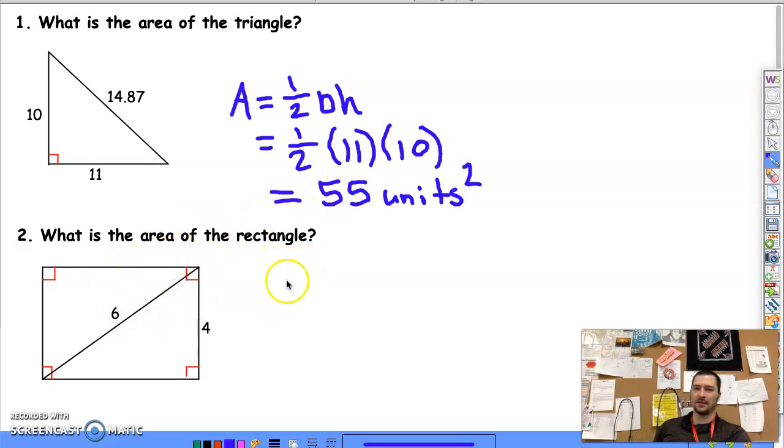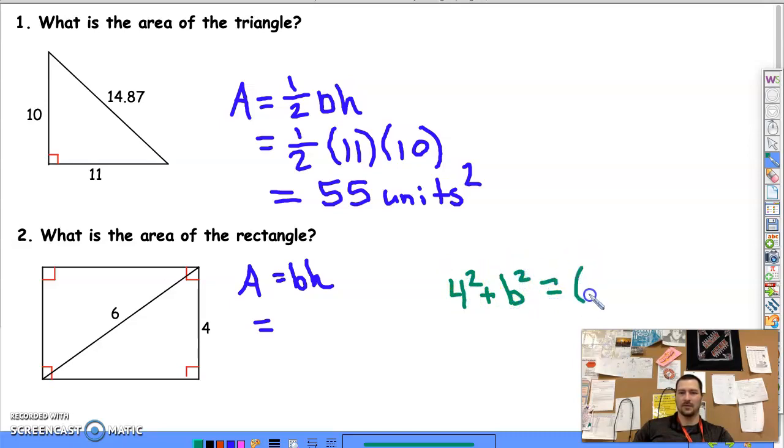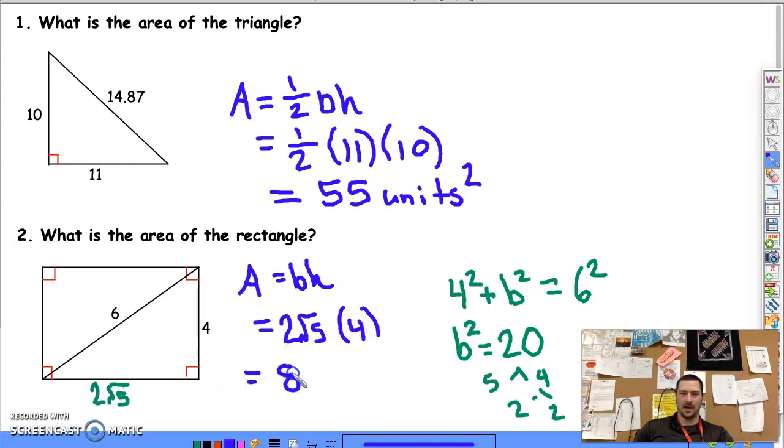All right, next, area of a rectangle, so that is just base times height. So, the problem is we don't know what our base is. So, we do have a right angle, which means we can use Pythagorean theorem. So, skip on over here. 4 squared plus, call it B, since it's our base, equals 6 squared. So, B squared, if you do 36 minus 16 is going to be 20, which, if you do your factor tree, 5, 4, 2, and 2. So, it would be 2 root 5 here, which means, when we go back to do our area, base is 2 root 5 times the height, which is 4. So, we would get a total of 8 root 5, and units squared. So, simple area problems there.